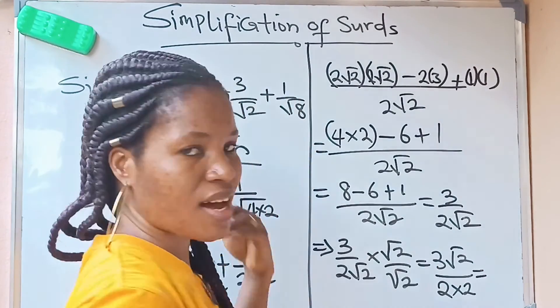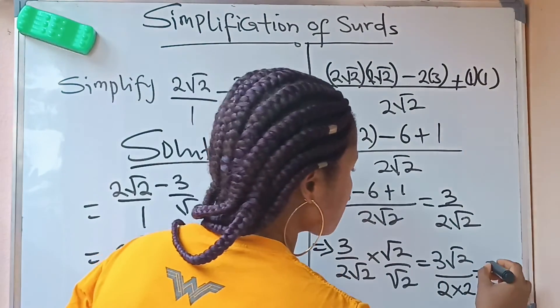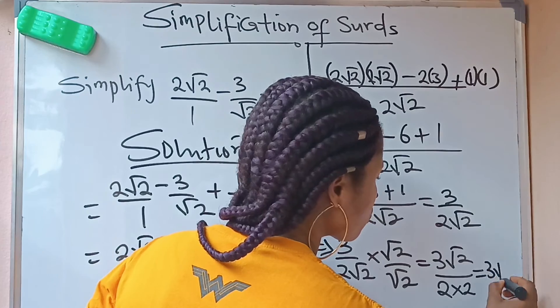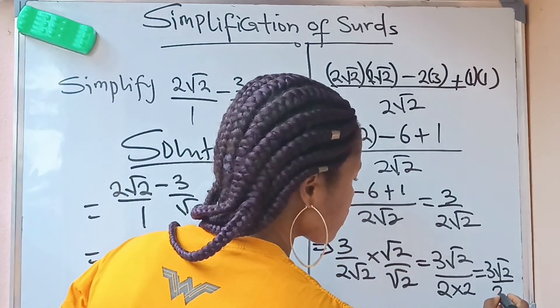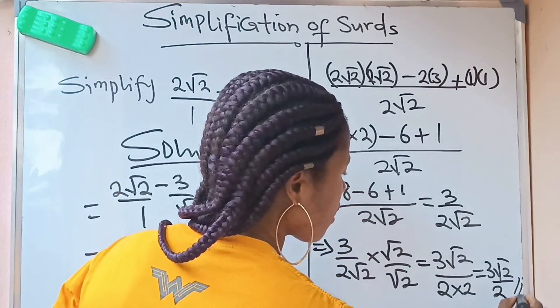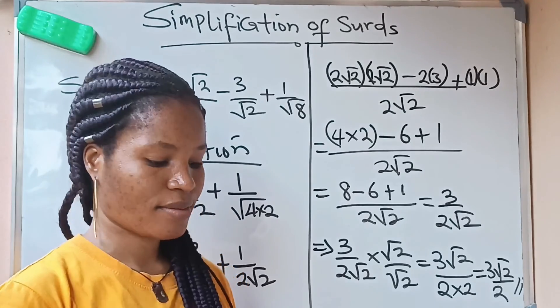So the final answer is 3 root 2 all over 4. Do have a lovely day, goodbye!